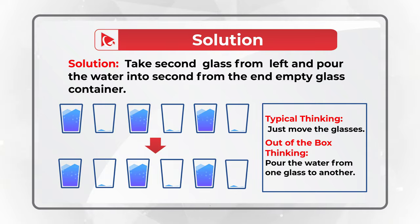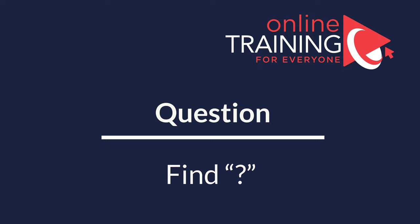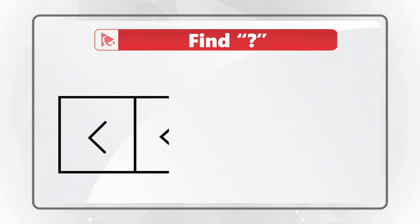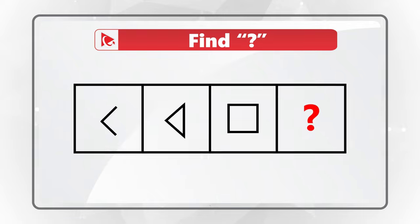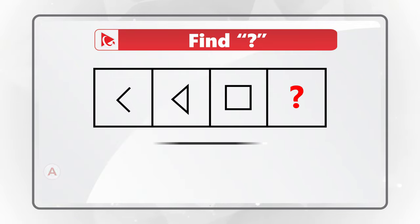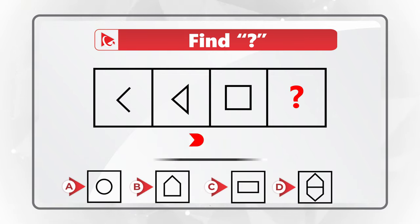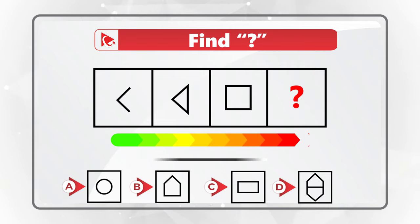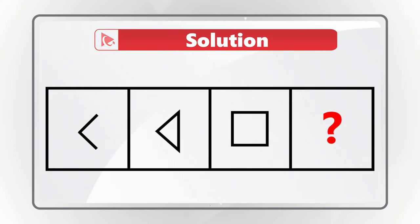Here's a wonderful question to test your analytical skills. You're presented with a series of shapes in boxes: the first box has an arrow pointing left, the second has a triangle pointing left, the third has a square, and then comes the box with the missing shape. You have four choices: A, B, C, and D. Give yourself a little time — maybe pause this video. I'm moving forward to reveal my version of the solution.